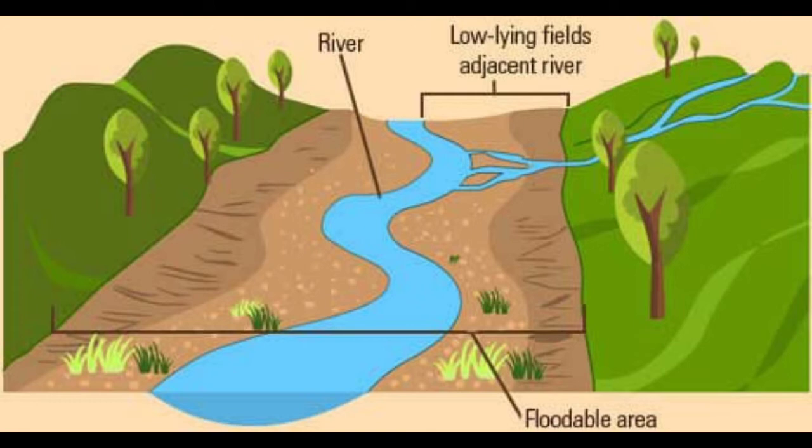The flood starts from the floodable area — where rivers and oceans overflow when the water flows out. When rivers and oceans overflow, that is when the flood starts. If we take care during heavy rainfall, we can try to protect ourselves.